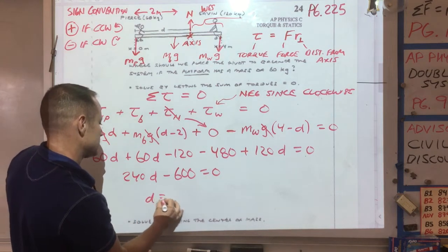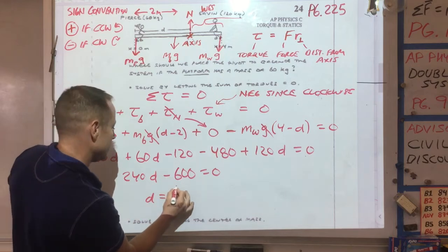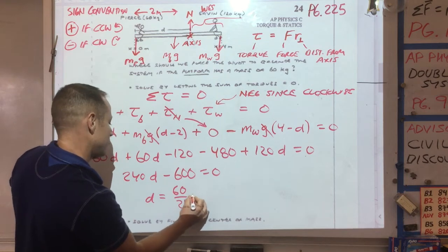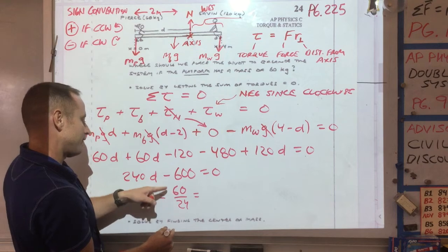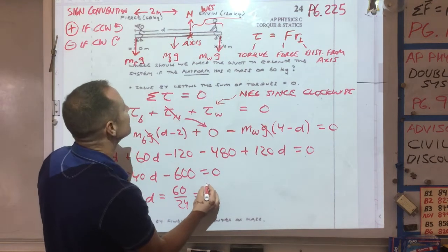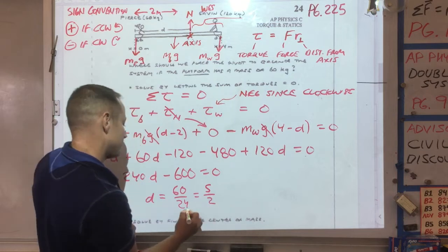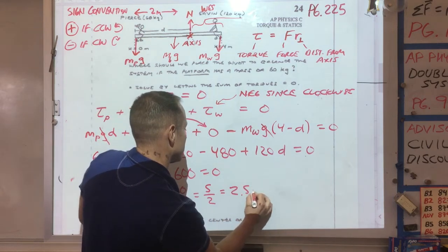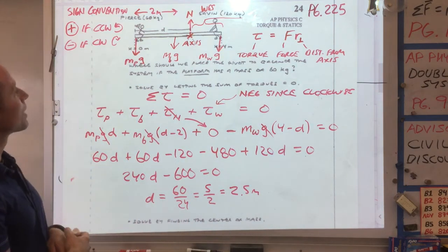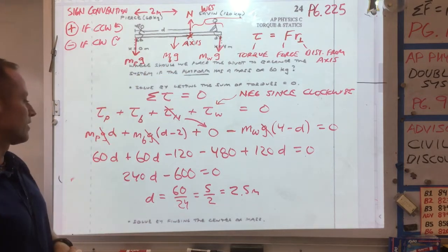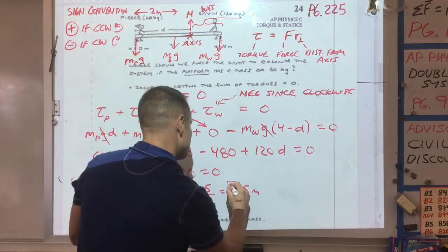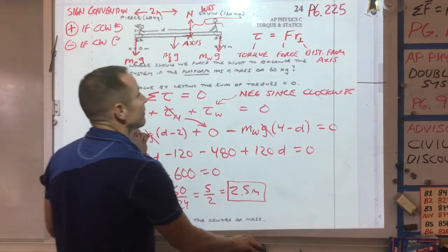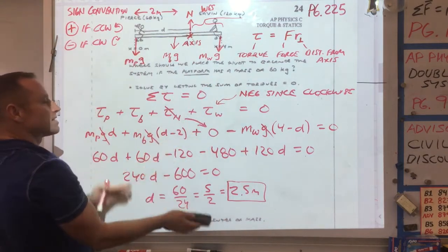So d is going to be 600 over 240, otherwise known as 60 over 24, or otherwise known as 10 fourths, or 5 halves. So that's going to be 2 and a half. So it looks like we're going to have to put this pivot, or the axis, at 2 and a half meters. So that's where the pivot should go. So that's solving this thing using torque.